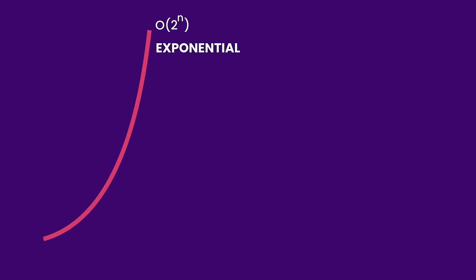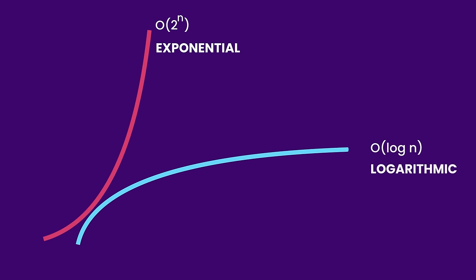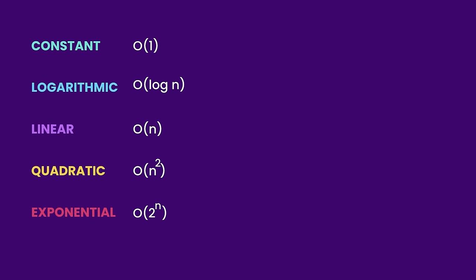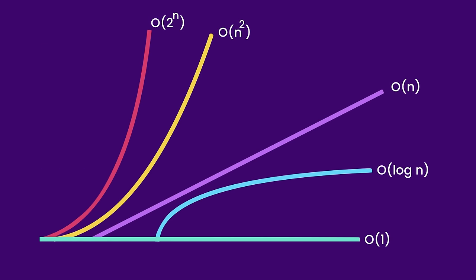The last growth rate is exponential growth — the opposite of logarithmic growth. The logarithmic curve slows down as input size grows, but the exponential curve grows faster and faster. An algorithm running in exponential time is not scalable at all — it will become very slow very quickly. Just remember these five curves: O(1), O(n), O(n²), O(log n), and O(2^n).